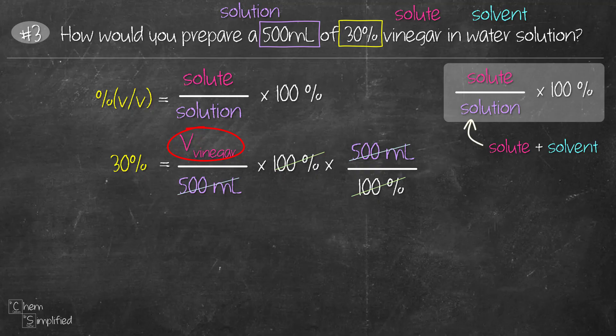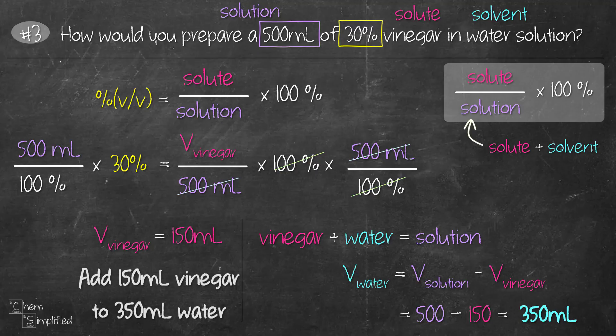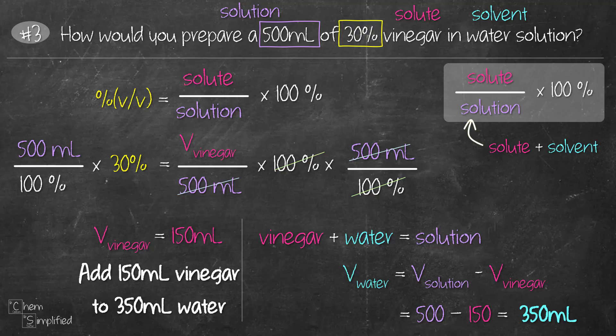Since we did that on the right hand side, we need to do the same thing on the left hand side. So the volume of vinegar works out to be 150 ml which came from 500 divided by 100 times 30. Since the solution is made out of vinegar and water, we can find a volume of water by subtracting the volume of vinegar from the solution and that works out to be 350 ml. So to prepare the 30 percent vinegar in water solution, we need to add 150 ml of vinegar to 350 ml of water.